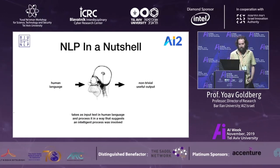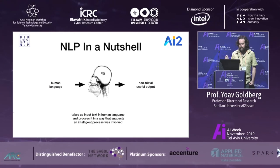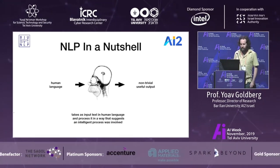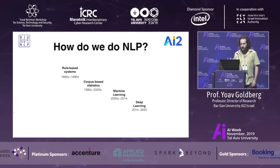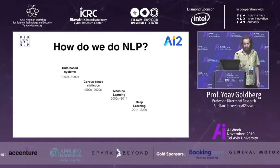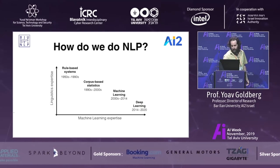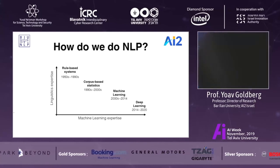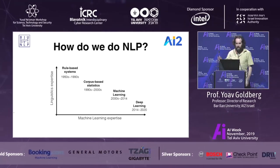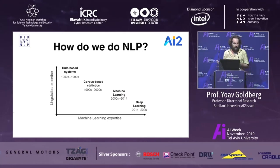To summarize what NLP is for me in a nutshell: it's a semi-smart system that takes human language as input and produces some non-trivial useful output, maybe trying to convince some user that some process of intelligence was involved. If you think about how we do NLP, we progressed from rule-based systems — written patterns over text — to corpus-based statistics, to more traditional machine learning, and recently deep learning. There was a trade-off: you used to need a lot of linguistic expertise, and now you need a lot of machine learning expertise.